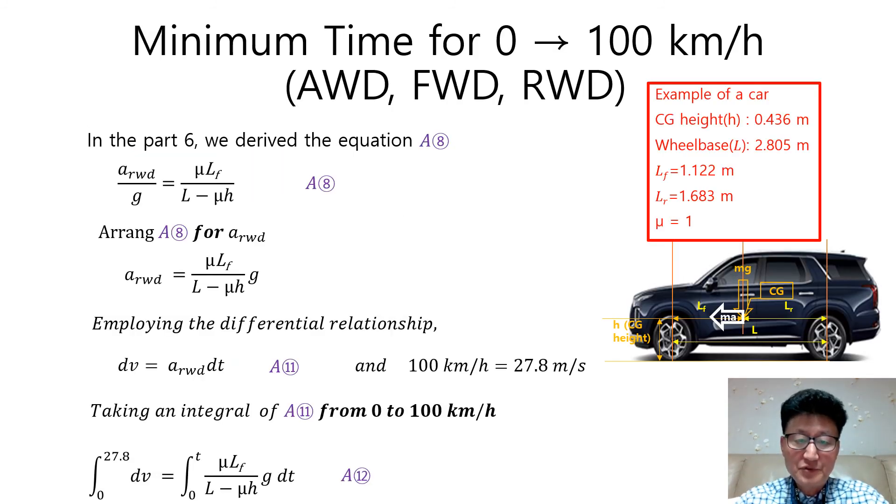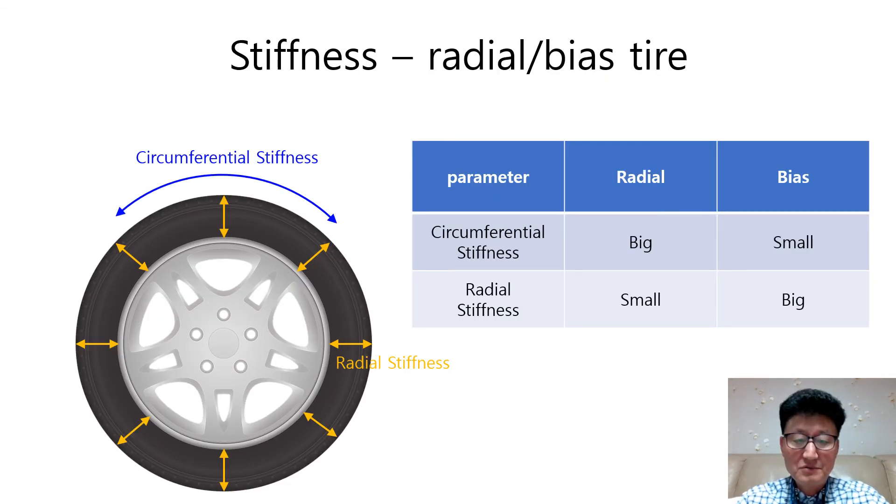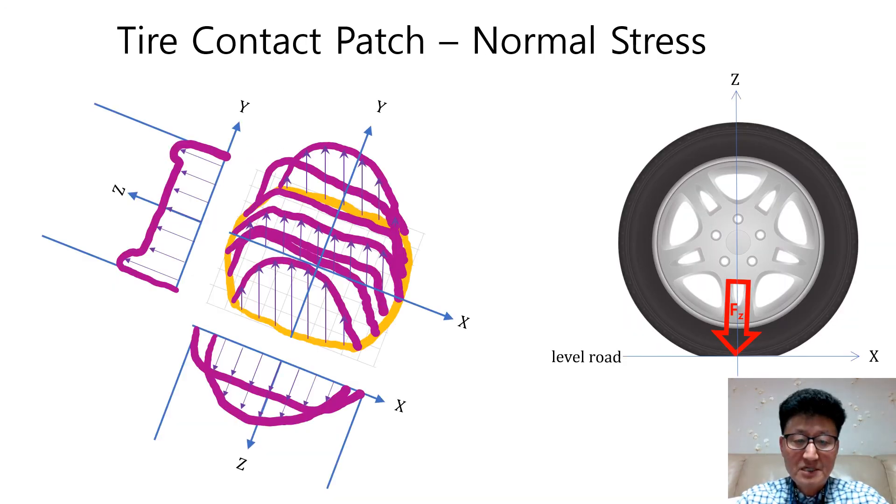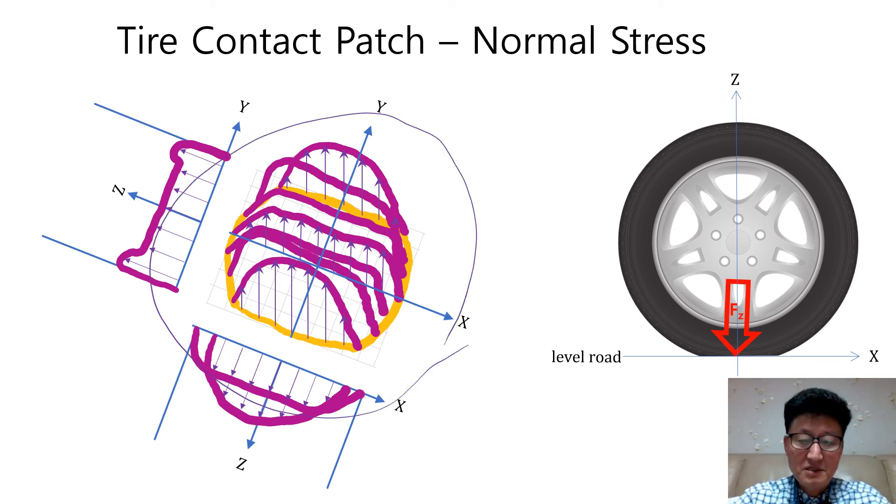Previous videos will help you get your knowledge deeper on vehicle dynamics. I explained the process to calculate the minimum time from 0 to 100 km per hour for all drive types: all-wheel drive, front-wheel drive, and rear-wheel drive. Also, I explained the stiffness characteristics about radial tire and bias tire. Recently, I explained the stress distribution of tire with being parked on the lever load.